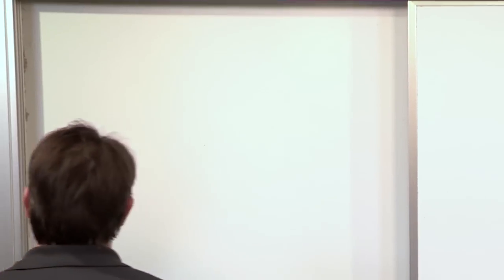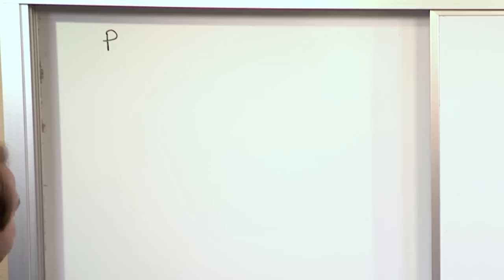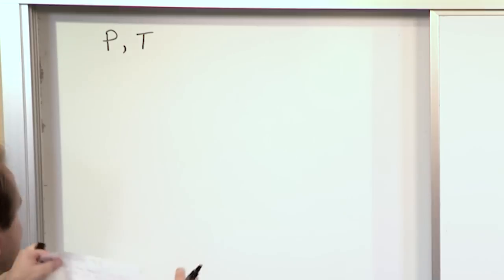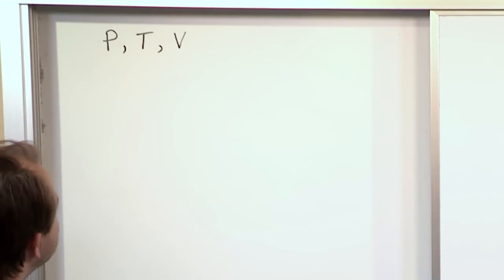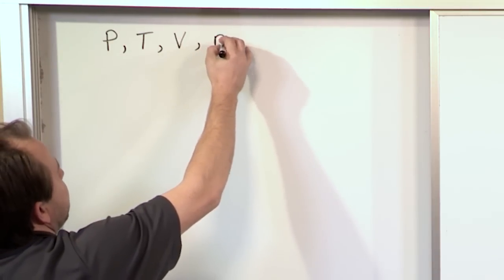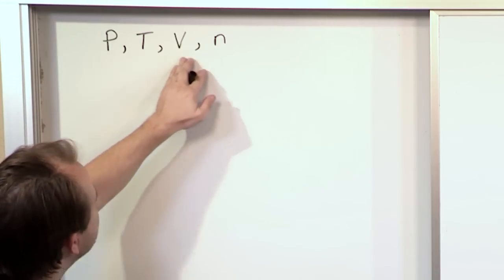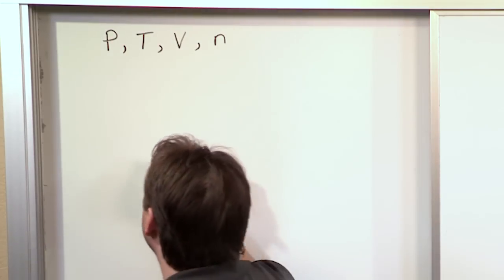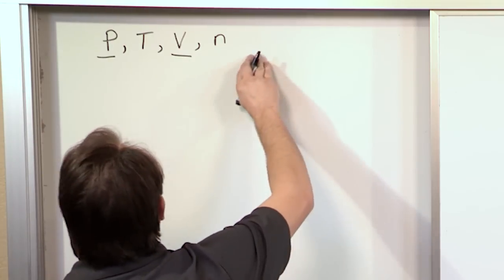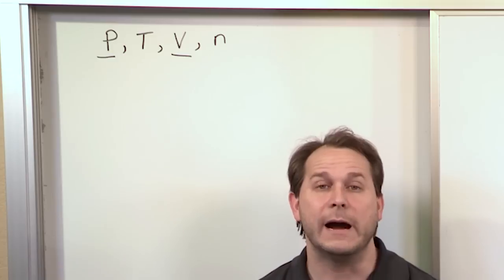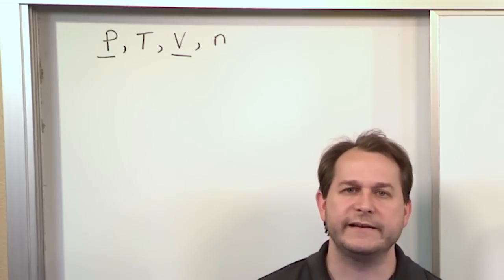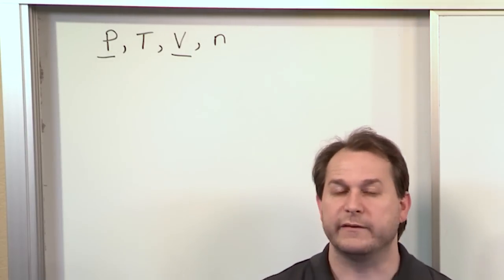When you think of a gas, what properties could totally describe it? A given gas is going to have some kind of pressure associated with it, so we'll call that P. A gas may also have a temperature, T. And of course a gas is going to occupy a fixed volume, V. Also, any gas will have a certain amount to it — the number of moles, n. These are the important variables that govern the behavior of all gases. Any gas can be described by its pressure, volume, temperature, and n, which is the number of moles. If you know all of those things, you know everything there is to know about that gas.